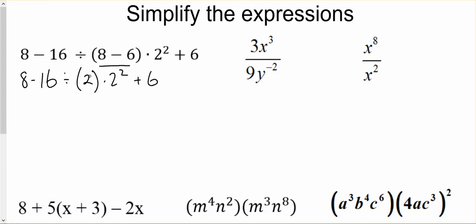We see parentheses, but there's nothing going on, so we're going to do exponents next. 2 squared is 4, so we have 8 minus 16 divided by 2 times 4 plus 6. Now we've got subtraction, division, multiplication, and addition, so we're going to work from left to right.